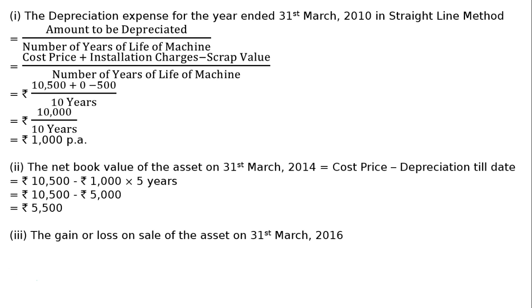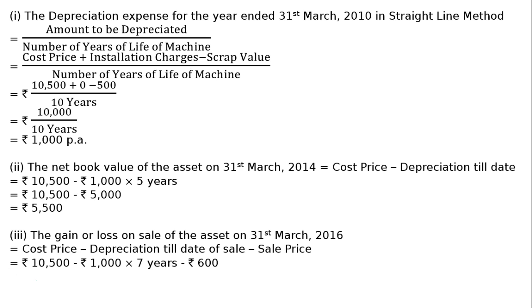Third is the gain or loss on sale of the asset on 31st March 2016. The gain or loss on sale equals cost price minus depreciation till the date of sale, minus the sale price. Cost price is Rs. 10,500. From the date of purchase, 1st April 2009, till 31st March 2016, it is complete seven years. We deduct depreciation for seven years: Rs. 1,000 into seven equals Rs. 7,000. The asset was sold for Rs. 600. Hence, the loss on sale is Rs. 10,500 minus Rs. 7,000 minus Rs. 600, which equals Rs. 2,900. This is our final answer.